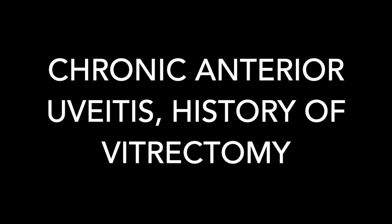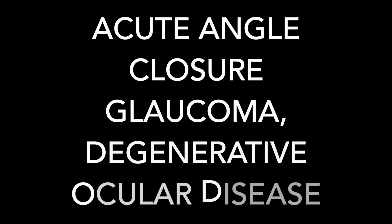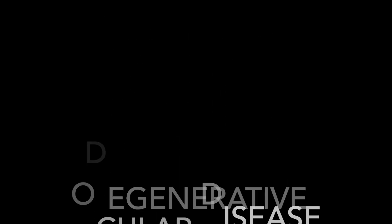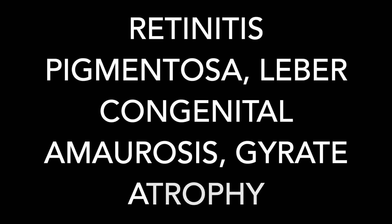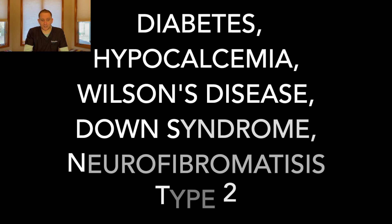Secondary causes that contribute to cataract development include chronic anterior uveitis, a history of vitrectomy, ionizing radiation, a tumor of the ciliary body, acute angle closure glaucoma, and degenerative ocular disease such as retinitis pigmentosa, Leber congenital amaurosis, and gyrate atrophy. Endocrine, metabolic, and chromosomal disorders such as diabetes, hypocalcemia, Wilson's disease, myotonic dystrophy, Down syndrome, and neurofibromatosis type 2 can also lead to specific types of cataracts.